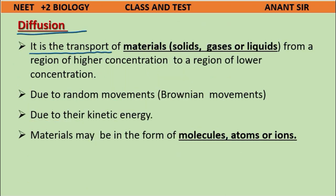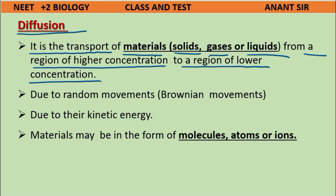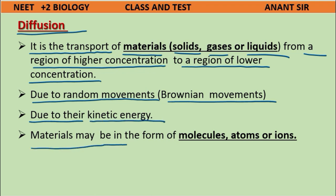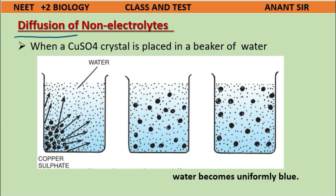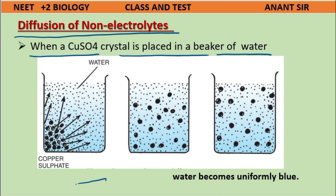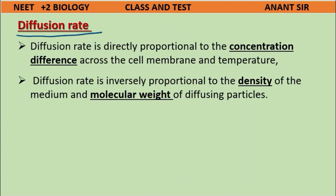Diffusion is the transport of materials — solids, liquids, or gases — from a region of higher concentration to a region of lower concentration, due to random Brownian movements from kinetic energy. Materials may be in the form of molecules, atoms, or ions. For example, placing a CuSO₄ crystal in a beaker of water demonstrates diffusion of non-electrolytes. Diffusion rate is directly proportional to concentration differences across the cell membrane and temperature.